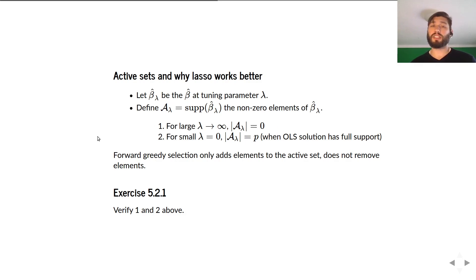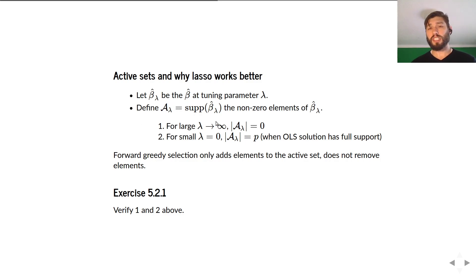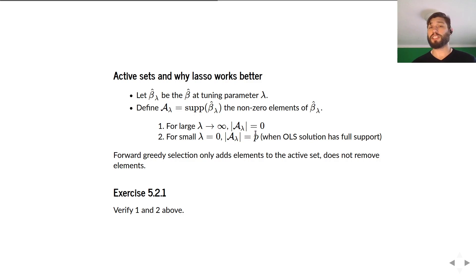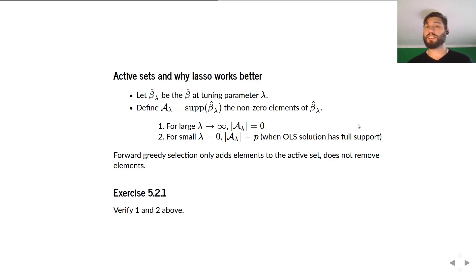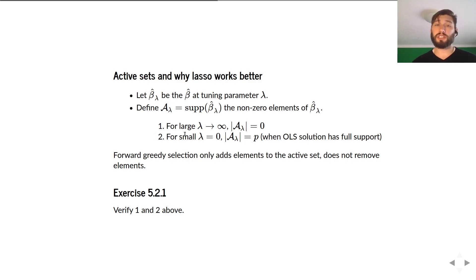For large lambda approaching infinity, I claim the active set approaches the empty set — the penalty dominates and the best solution sets beta hat to zero. For lambda equal to zero, the active set approaches size P, assuming ordinary least squares doesn't have zeros in beta hat. Think about why this would be true — we'll make that an exercise.